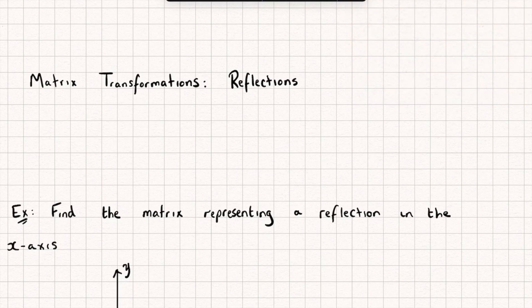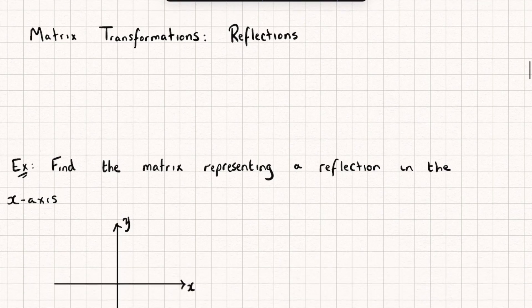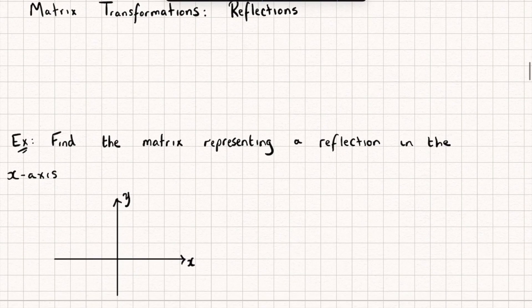So let's look at this first example where we're asked to find the matrix representing a reflection in the x-axis. Remember, we can find any given transformation matrix by seeing what happens to our i and j unit vectors under the transformation — so that's the point (1, 0) and the point (0, 1).